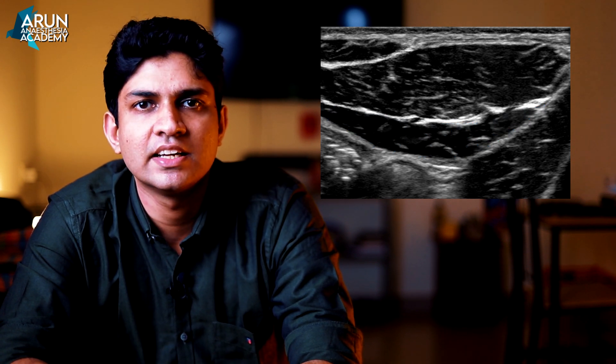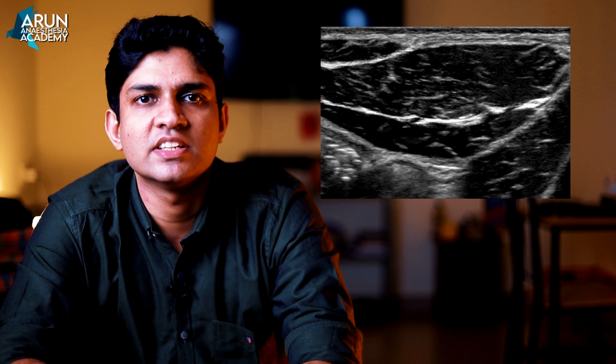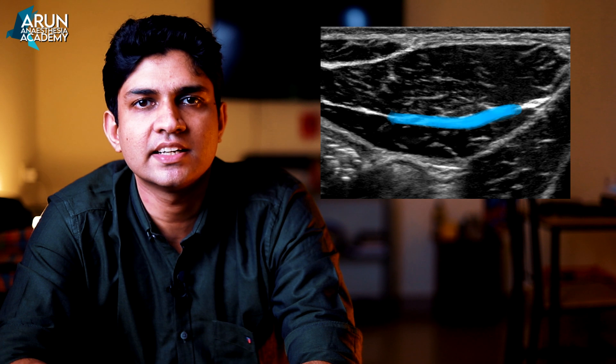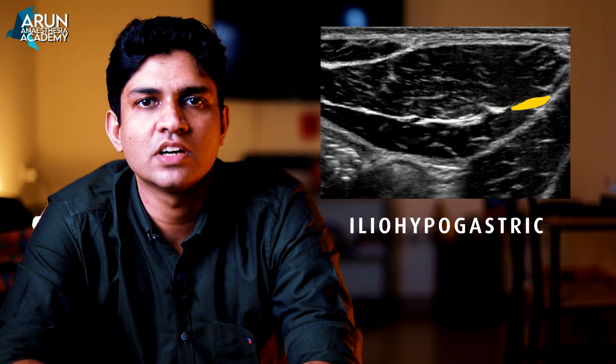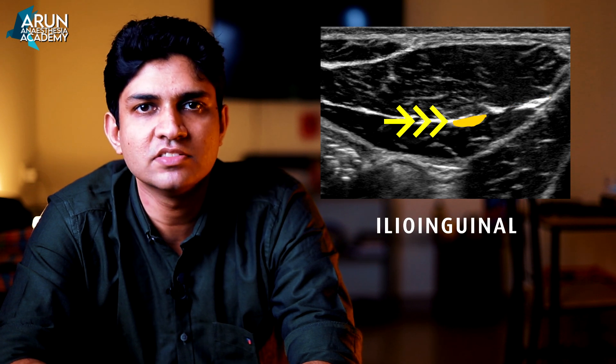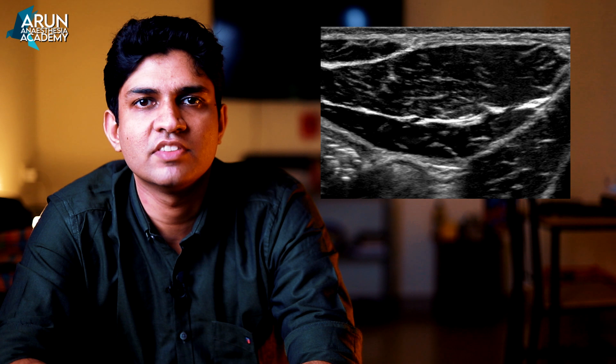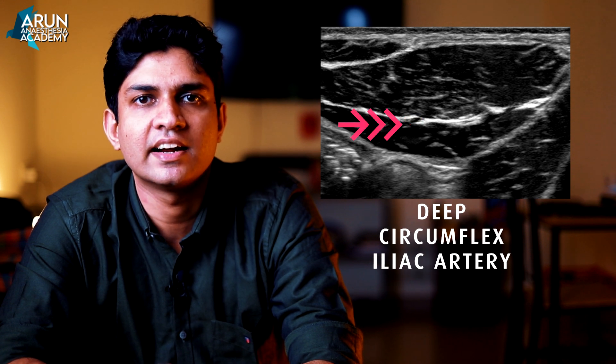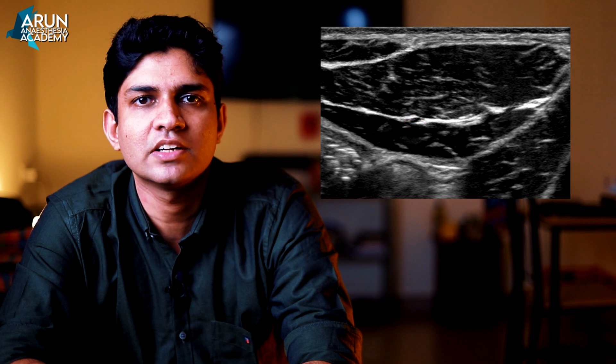The target area is between the internal oblique and the transverse abdominis muscle — the same as in the TAP block. Here we can easily identify the iliohypogastric and ilioinguinal nerves as hyperechoic oval structures in that plane. We can also identify the deep circumflex iliac artery in the same plane; color Doppler helps confirm the vessel's pulsation and clearly identify the plane. It is best to scan more proximally, towards the lateral aspect of the anterior superior iliac spine, to avoid sparing any branches when depositing local anesthetic.